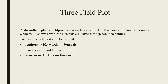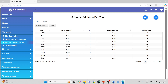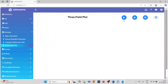A three-field plot is a bipartite network visualization that connects three bibliometric elements, showing how these elements are linked through common entities. We can create three-field plots of authors, keywords, journals, countries, institutions, and topics. Common types in Biblioshiny are authors, keywords, and journals. To generate this, go into Biblioshiny and activate the three-field plot by pressing the play button.